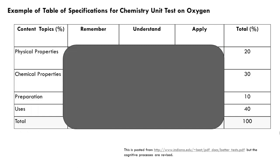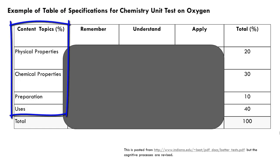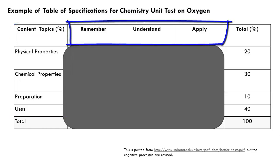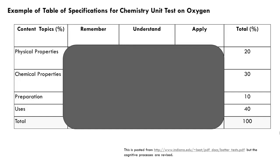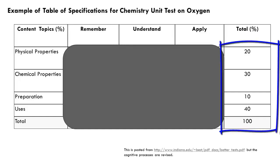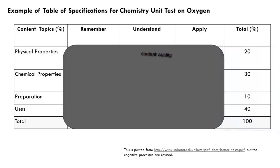You might want to consider creating a table of test specifications, like this simplistic example introduced in video 11.1. This lists the content topics derived from the learning objectives in one dimension of the table, and the cognitive processes to be addressed in the other dimension. It breaks down the number of test items that address the content and skills to include in the test, reflecting course content and skills in roughly the same proportion.